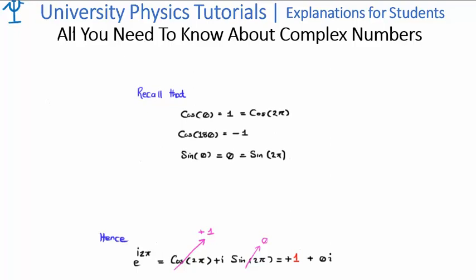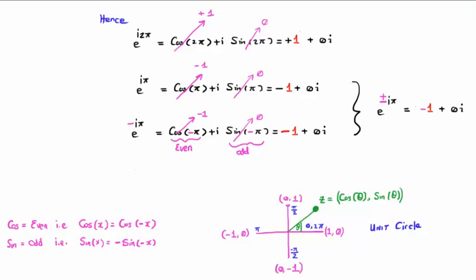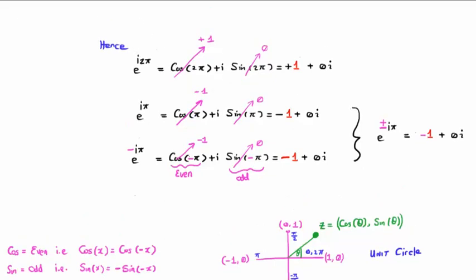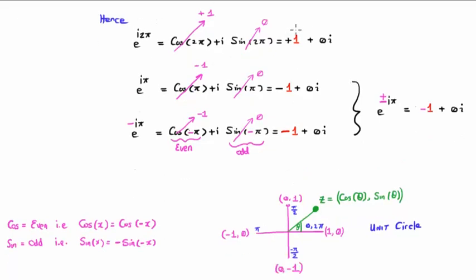The next thing I'd like to talk about are the phases of a complex number. Recall from the unit circle the following results. We know that the cosine of zero is the cosine of twice pi equals plus one. And we know that the cosine of pi, or 180 degrees, is negative one. We know that the sine of zero is the sine of twice pi equals zero. So let's plug these into our Euler equation and see what we get. The answer is very useful results...